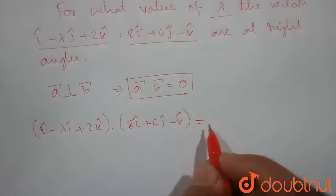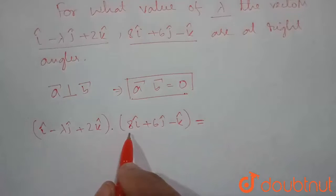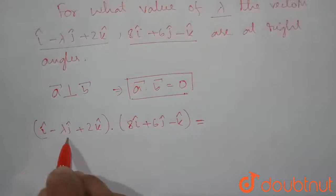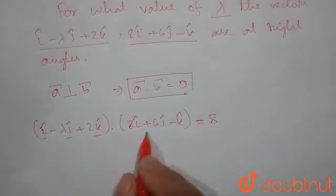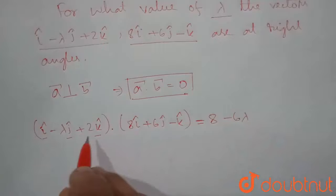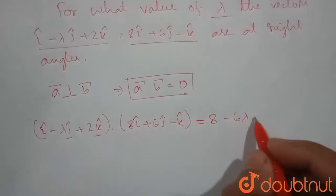So we know how we do dot product. We multiply the coefficient of each i cap, j cap and k cap. So here it will be 8 into 1 will be 8 minus 6 lambda and 2 into minus 1 will be minus 2.